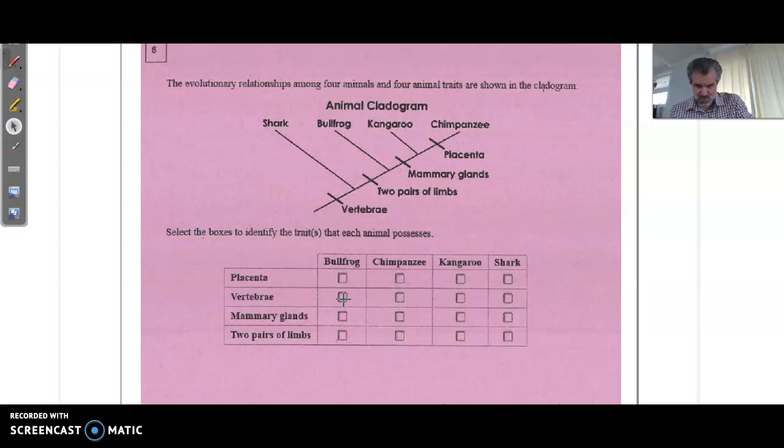If you did it by characteristic, all of them would have a vertebra, so you would put a check in each of those boxes. The two pairs of limbs would be everything except the shark. So two pairs of limbs we get the bullfrog yes, the chimp yes, the kangaroo yes.